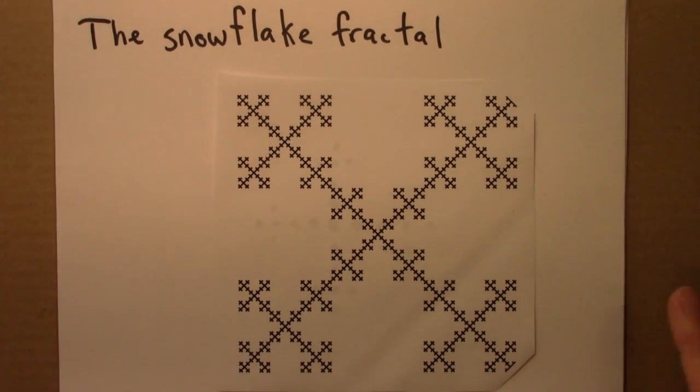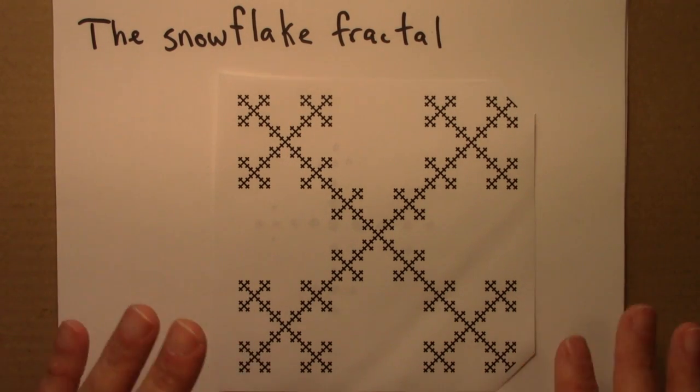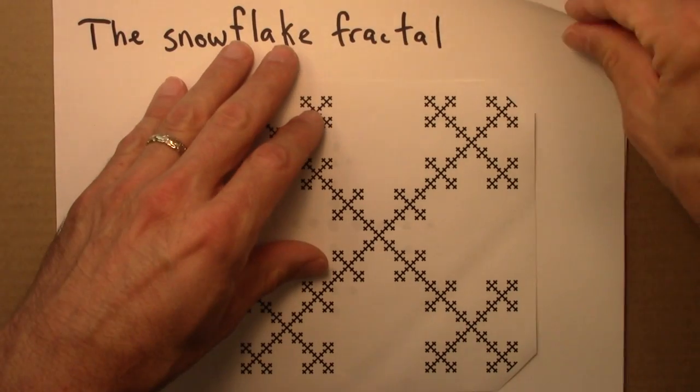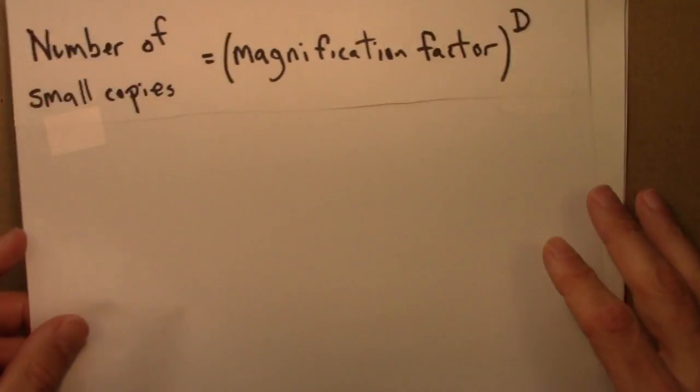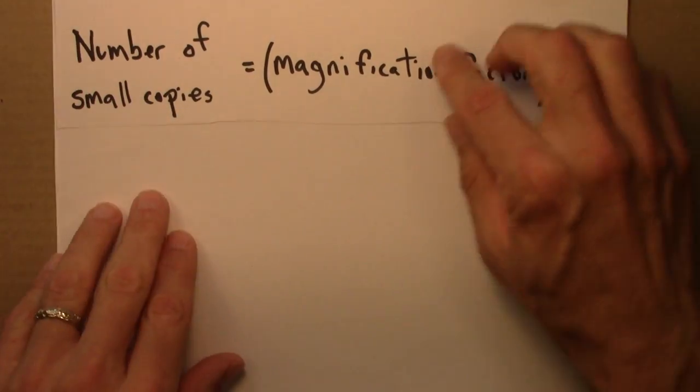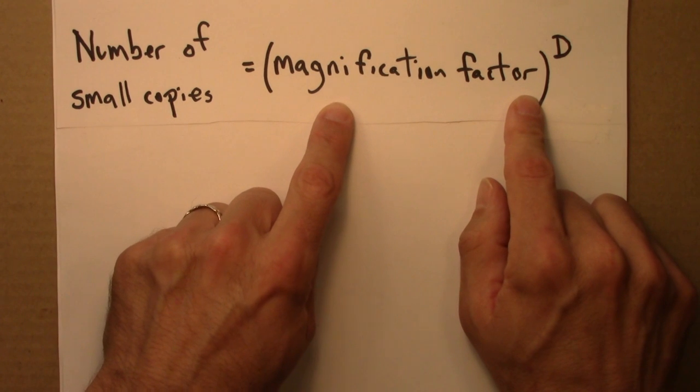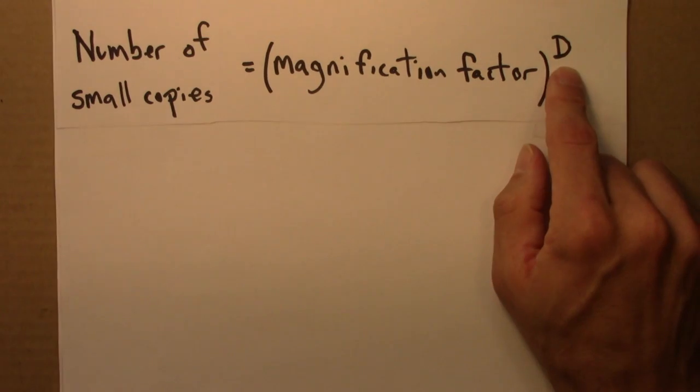In any event, we want to know what's the dimension of this. We'll do like we did for that triangle example and the other examples before - look at small copies and the large copy. To do that, we will again use our dimension equation. The number of small copies in an object is the magnification factor, or stretch factor, raised to the d power, where d is the dimension.